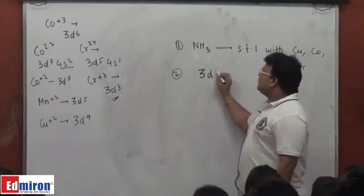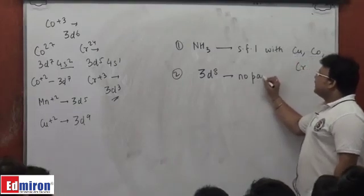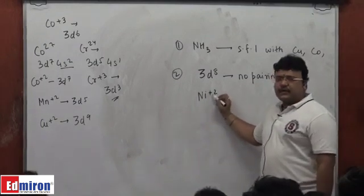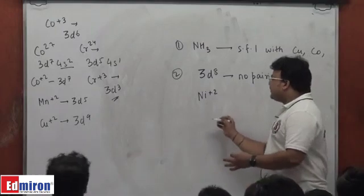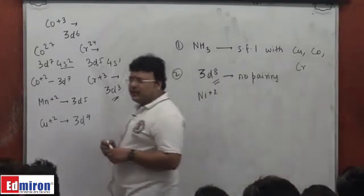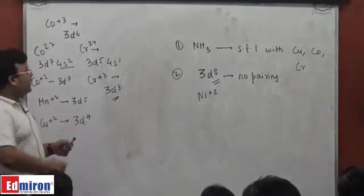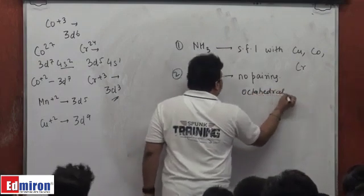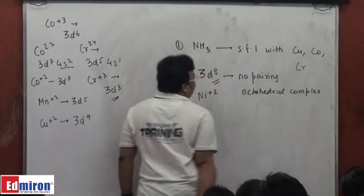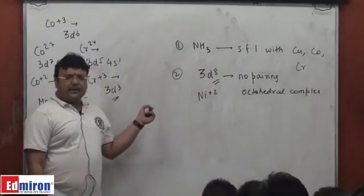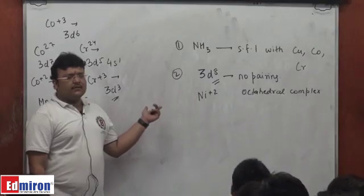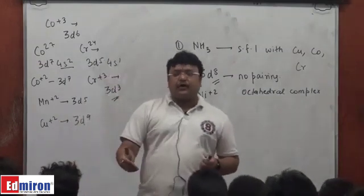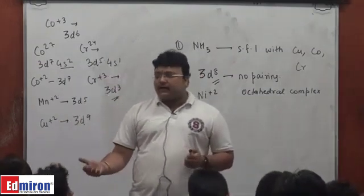We found that in 3d8 there was no pairing, speaking now in terms of configuration rather than the specific element. In the 3d8 octahedral case, the explanation for why strong field ligands do not pair up electrons there is that even if they were paired up, it would not free up two empty d orbitals — it will not get two empty orbitals.